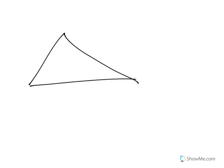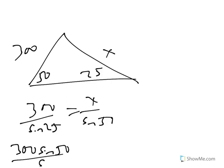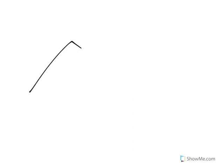So if we go back to the original question, 300, 25, x, I could just say 300 over sine 25 equals x over sine 50. Multiply both sides by sine 50, get 300 sine 50 over sine 25 equals x, which again is about 544. And that is another situation.